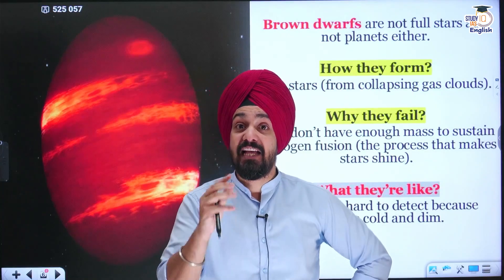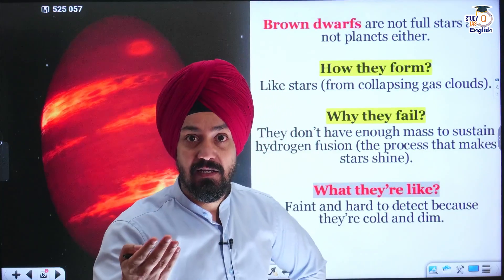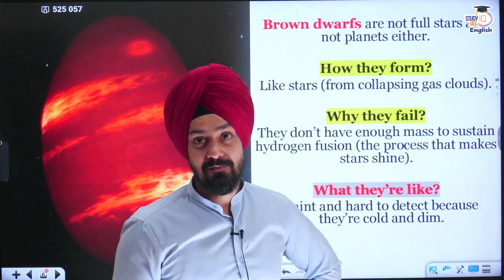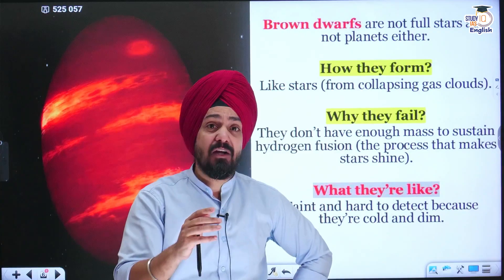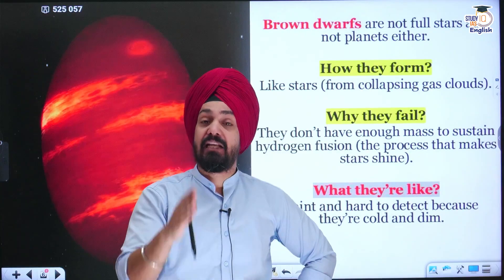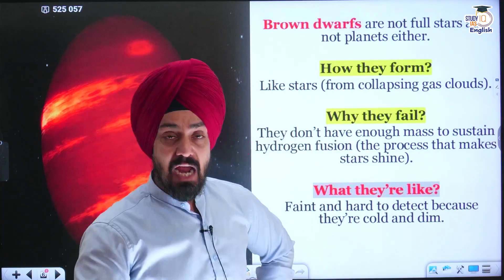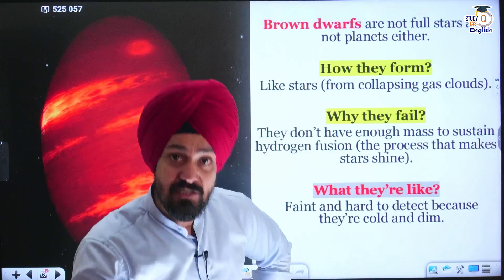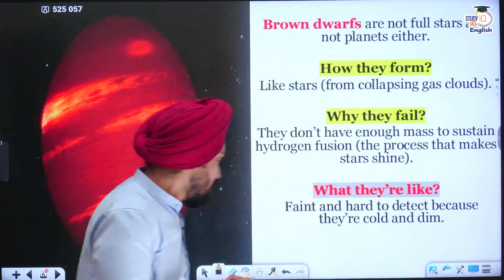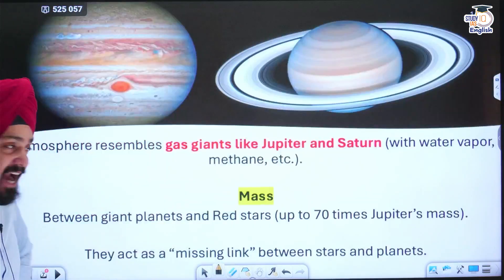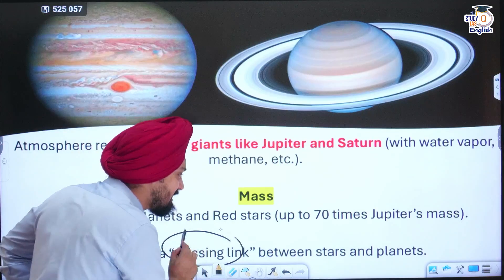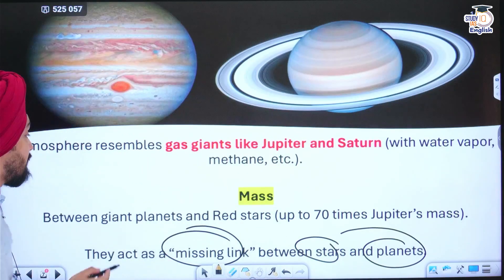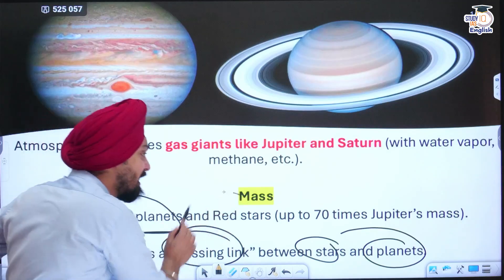This is why they remain very cold. With no source of heat inside their core, their temperature is very low. They do not emit visible light — the light they emit is infrared rays, which is not visible. Due to this, it is very hard for scientists to discover them. They are basically a missing link between red stars and planets — bigger than giant planets but smaller than red stars.